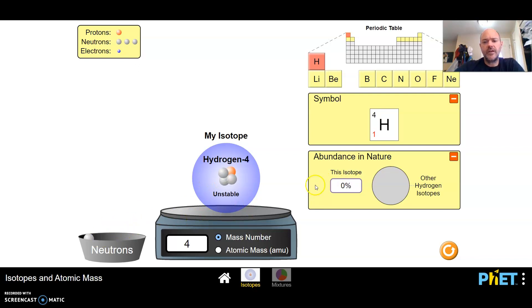Hydrogen four, zero percent abundance. And you notice this one's definitely unstable so this one just is not found. And then hydrogen five, again this is not found.